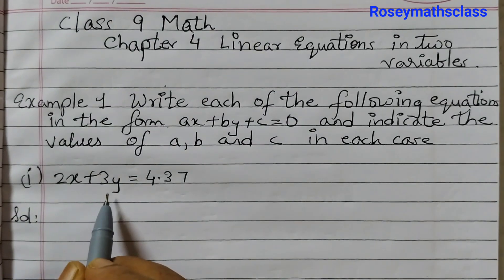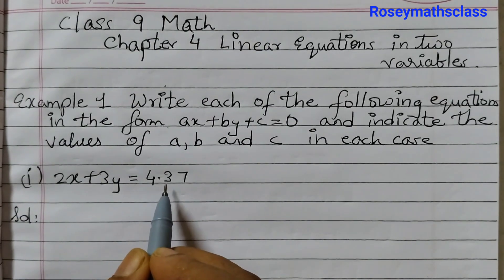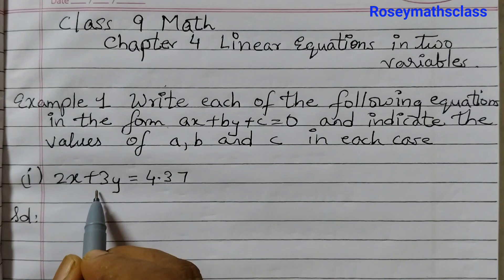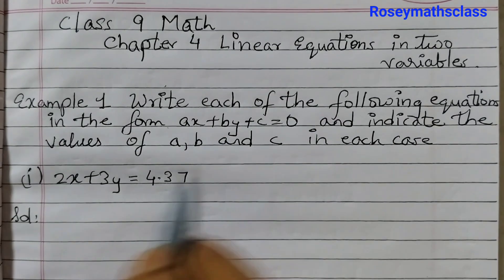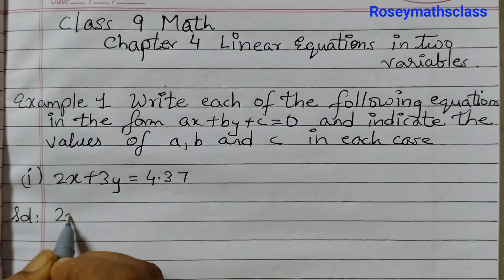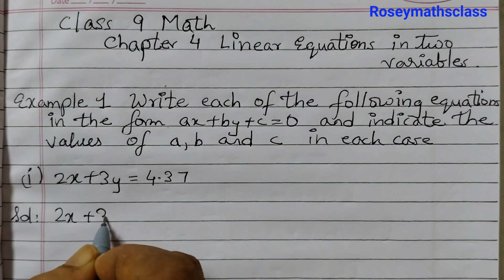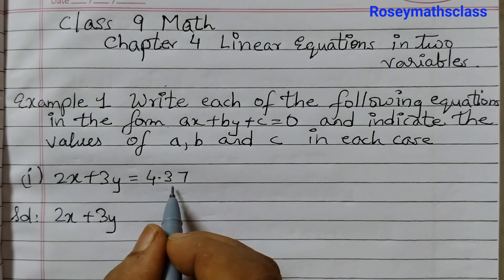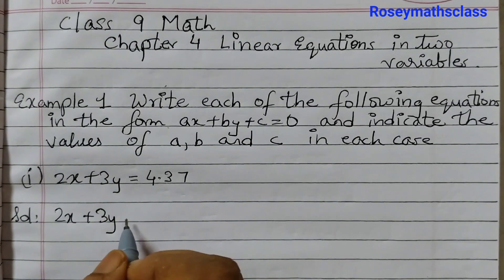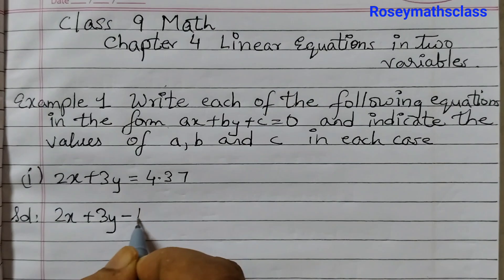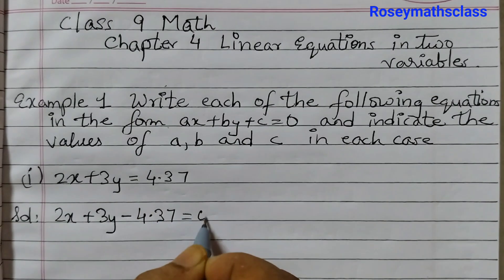The first one is 2x plus 3y is equal to 4.37. So first we need to get it in this form. So what we will do? 2x plus 3y get 4.37 on the left hand side. So sign will change, that will be minus 4.37 equals to 0.